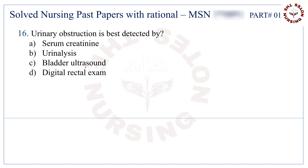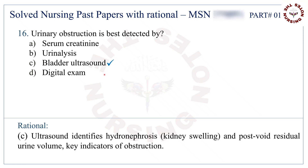Question number 16: Urinary obstruction is best detected by. The correct answer is C — bladder ultrasound.